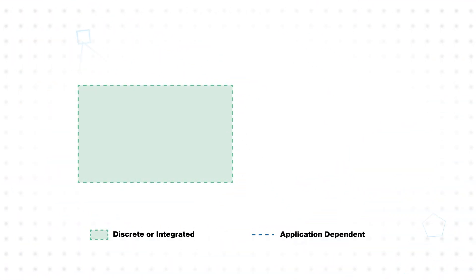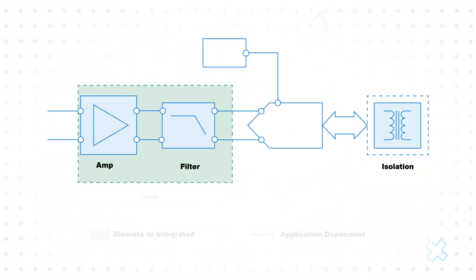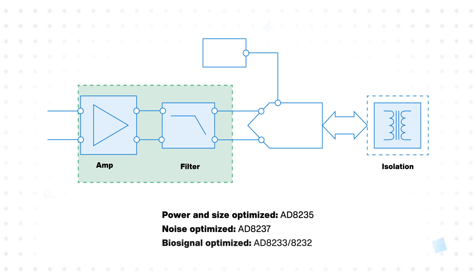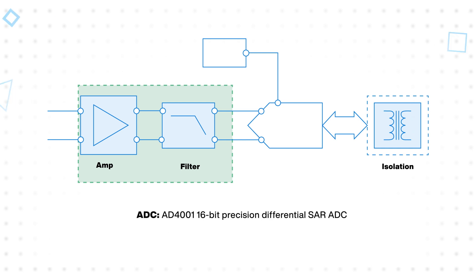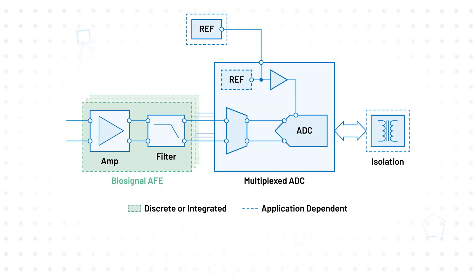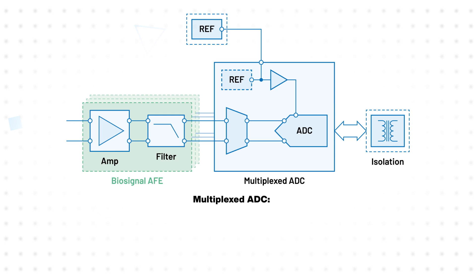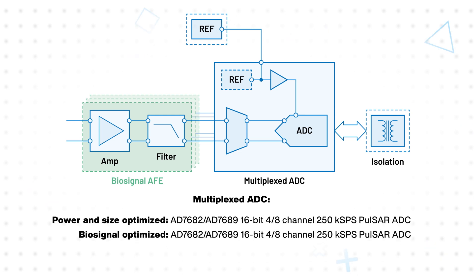For single-channel measurements, designers can leverage different ADCs based on the application, with options optimized for power and size, noise performance, or for use with bio signals. The amplifier output is sent to a precision SAR ADC using a micro power high accuracy voltage reference, with a micro power digital isolator between the ADC and host if needed. For multi-channel measurements, designers can use the same overall setup while swapping the ADC for a multi-channel ADC.